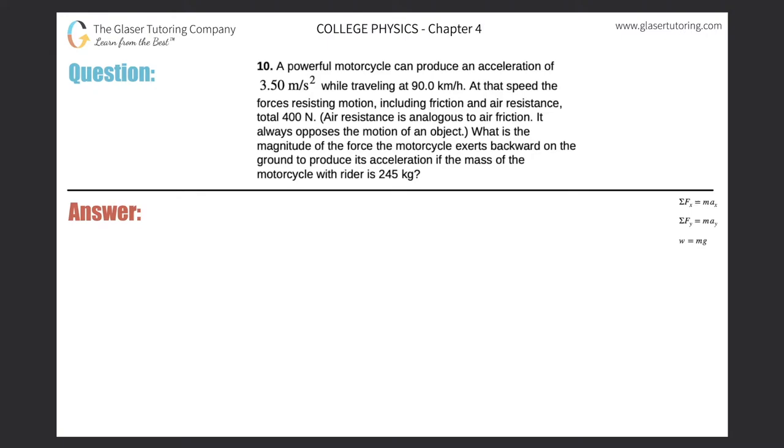Number 10. A powerful motorcycle can produce an acceleration of 3.5 meters per second squared while traveling at 90 kilometers per hour. At that speed, the forces resisting motion, including friction and air resistance, total 400 newtons. Air resistance is analogous to air friction. It always opposes the motion of an object. What is the magnitude of the force the motorcycle exerts backward on the ground to produce its acceleration if the mass of the motorcycle and the rider is 245 kilograms?